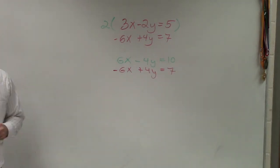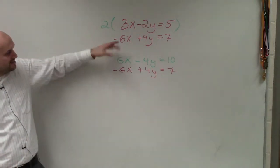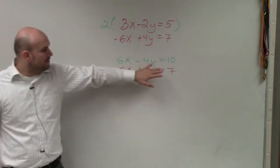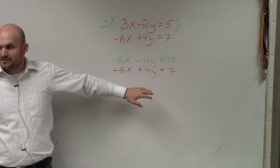Now, usually when we're doing elimination, we're only eliminating one variable at a time. But as you guys notice, when I multiply this, now both of my variables have coefficients that are exactly the same. Do you guys see that?